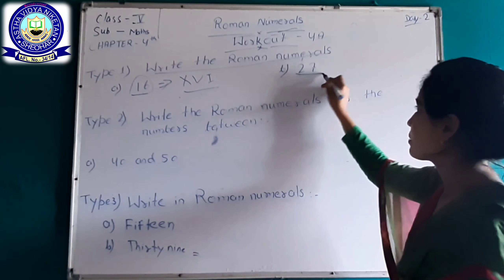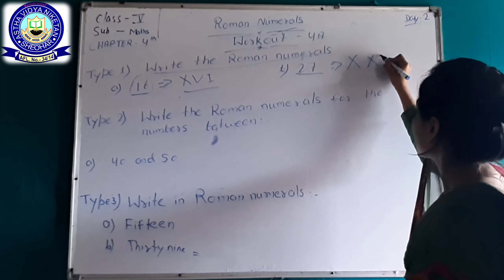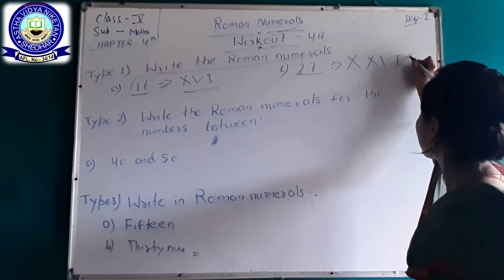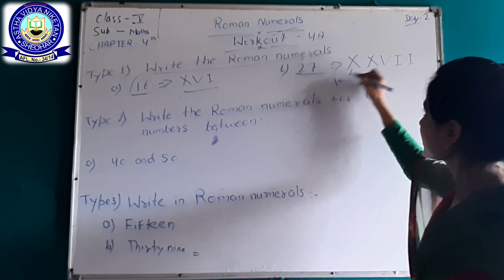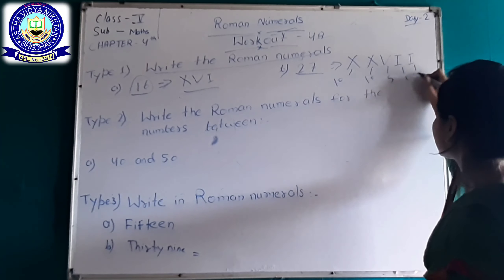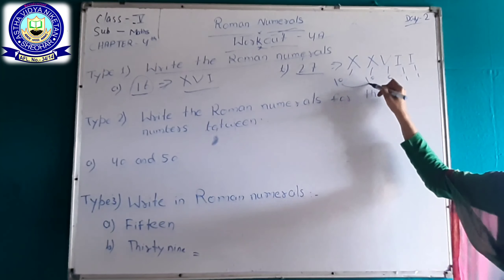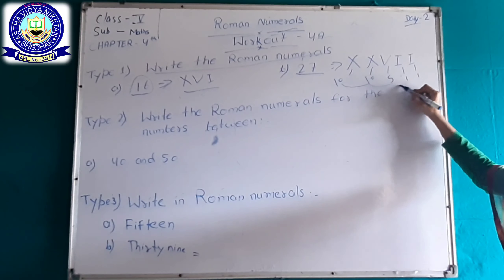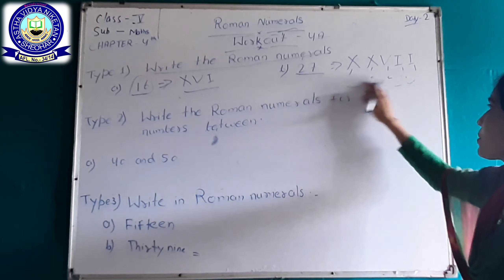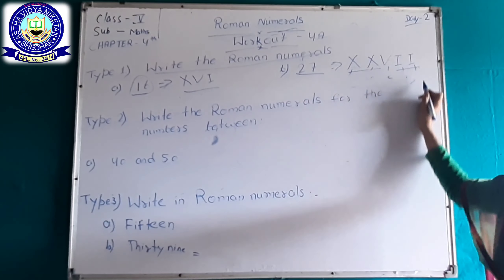Here is another example: 27. That is X and X for twenty, V for 5, and double I for 2. X means 10, this X means 10, V for 5, I means 1 and this I means 1. Ten plus ten is 20, 20 plus 5 is 25, then 26 and 27. So the Roman numerals of 27 is XXVII.